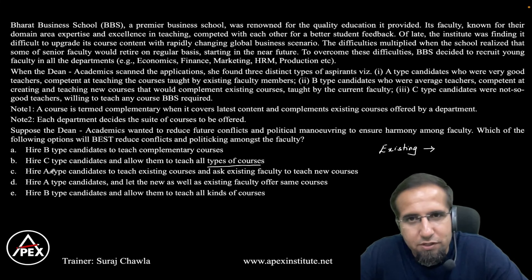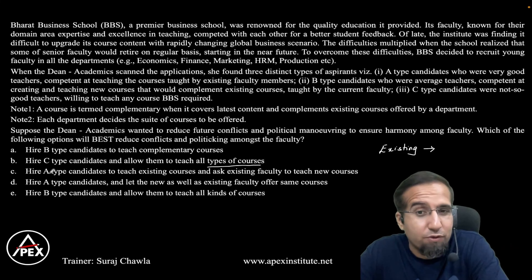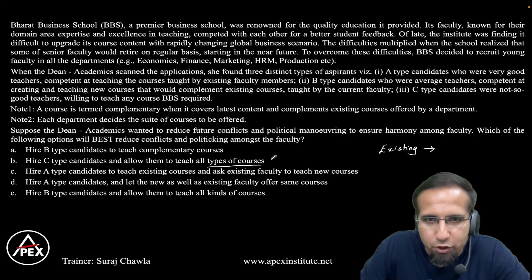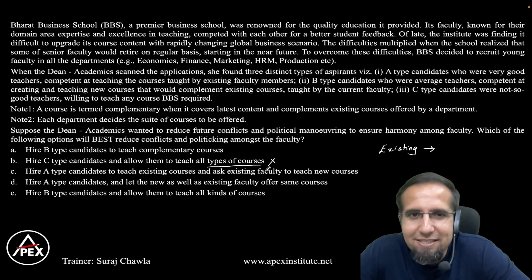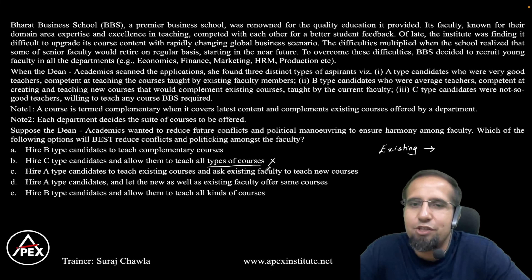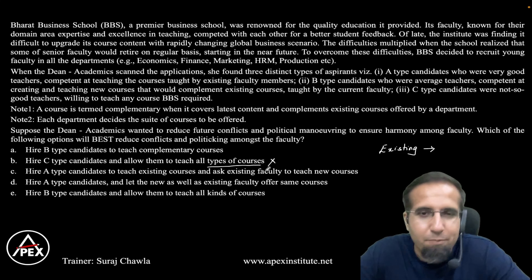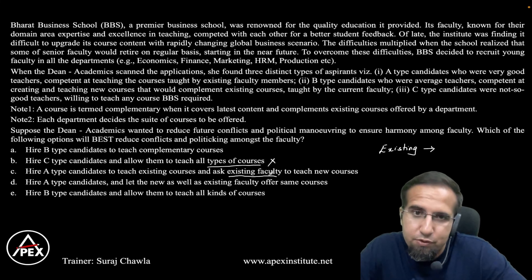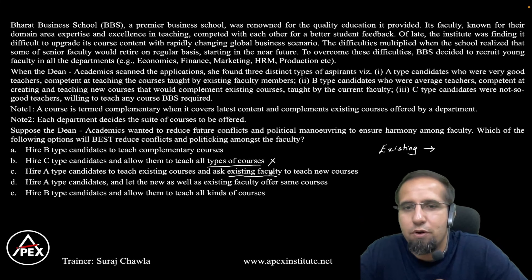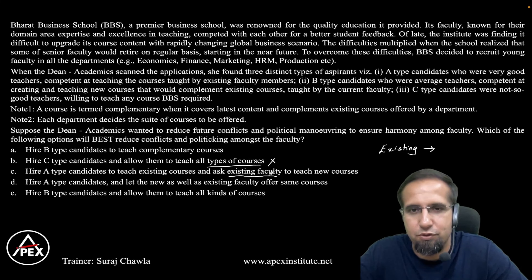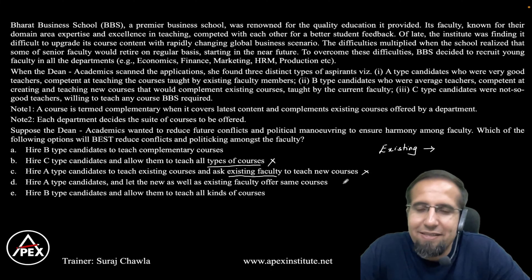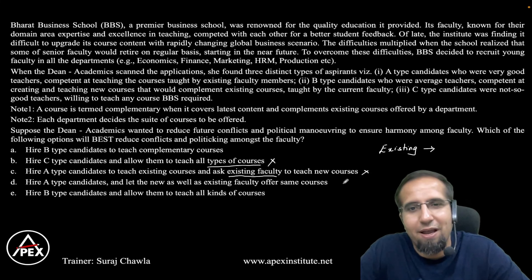Option B: hire Type C candidates and allow them to teach all types of courses — two problems: Type C are not good teachers, and allowing them to teach all types of courses will create conflict since existing faculty already take those courses with very good feedback. Option C: hire Type A candidates to teach existing courses and ask existing faculty to teach new courses — there will definitely be resistance from existing faculty who are comfortable in their own courses. This will increase future conflicts and break harmony.